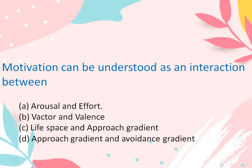Motivation can be understood as an interaction between: A. Arousal and Effort, B. Vector and Valence, C. Life space and Approach gradient, or D. Approach gradient and Avoidance gradient. The correct answer is A, Arousal and Effort. Motivation can be understood as an interaction between arousal and effort.